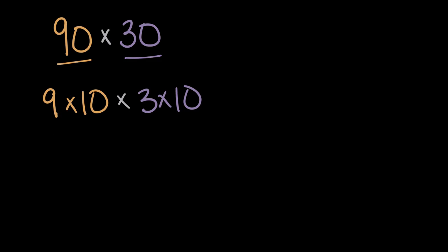And now, I'll reorder these numbers to put the one-digit numbers first, so nine times three, and then I'll put the tens times 10 times 10, because we need to have all the same numbers even if we change the order. So we have the nine, three, the first 10, and the second 10. And now, finally, we multiply.